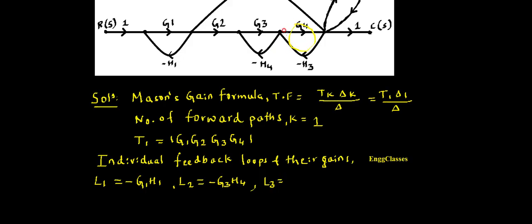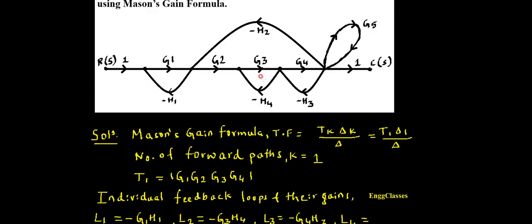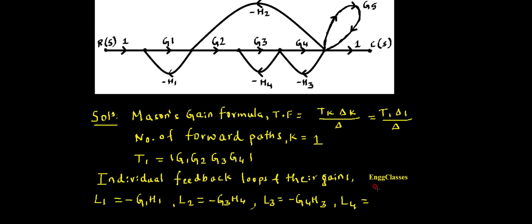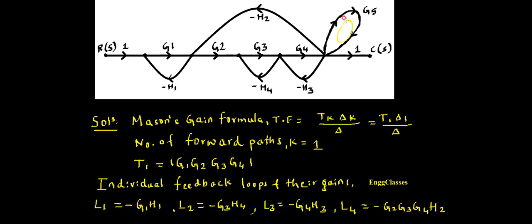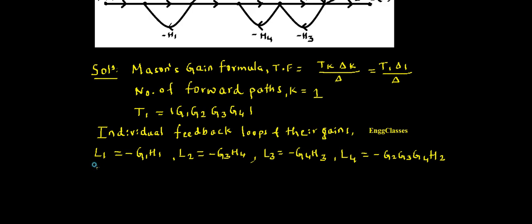Moving further, L3 = G4 × (−H3), so L3 = −G4·H3. Similarly, L4 is another feedback loop: starting with G2, G3, G4 and −H2, so L4 = −G2·G3·G4·H2. There is also one more self-loop, L5, which is equal to G5. That gives us five individual loops in total.